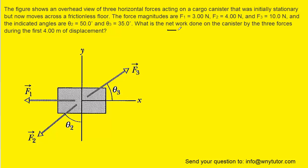In order to calculate the net work that's being done on this canister by the three forces, we could turn to the work equation, which tells us that the work done on an object is equal to the net force multiplied by the displacement times the cosine of an angle. And that angle will be between the net force and the displacement.